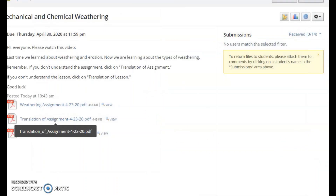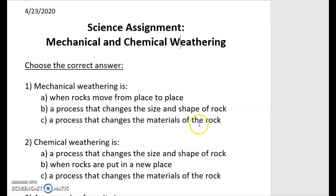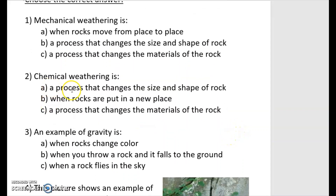Science assignment: mechanical and chemical weathering. Choose the correct answer. Mechanical weathering is: when rocks move from place to place, a process that changes the size and shape of rock, or a process that changes the materials of the rock?